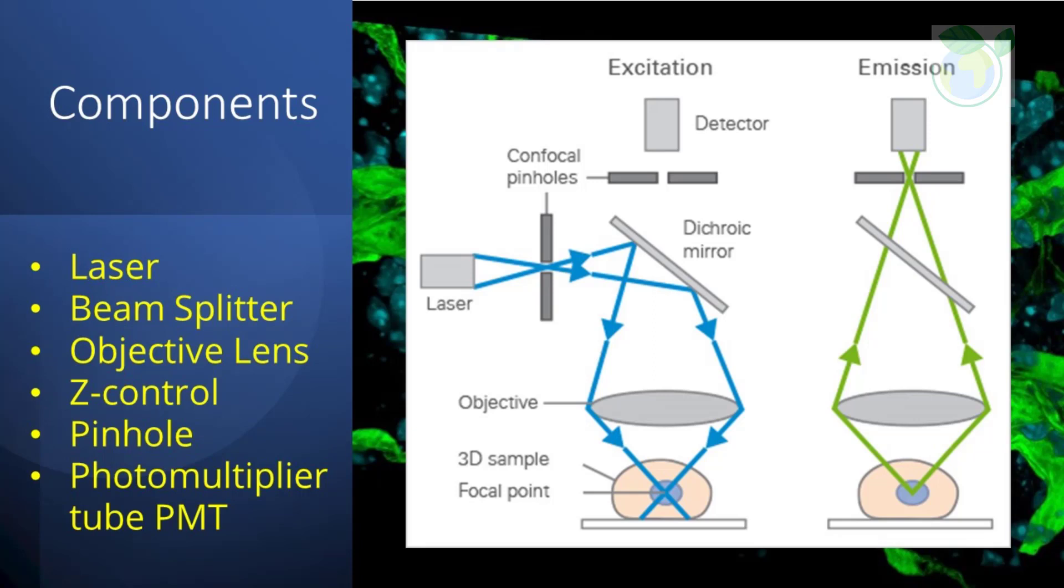In addition, the pinhole is an adjustable iris in the intermediate image plane. It allows exclusion of most of the out-of-focus light from the acquired image and thus provides optical sectioning capacity. It defines the thickness of the optical slice and is dependent on the properties of the objective lens. The pinhole size can be set via the software on your computer and the best trade-off between the efficiency of light collection and optical sectioning is if it is set to one airy unit.